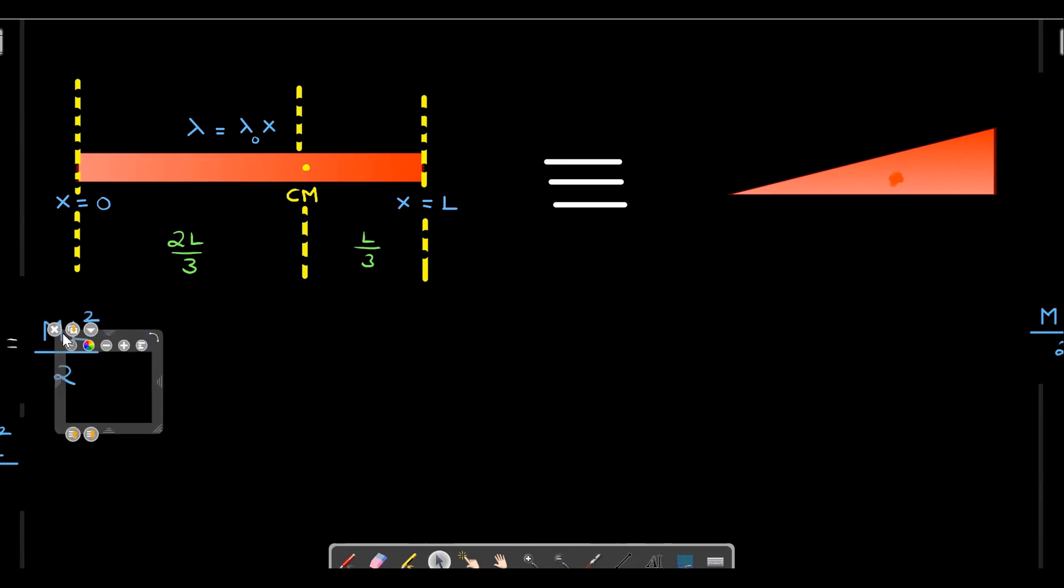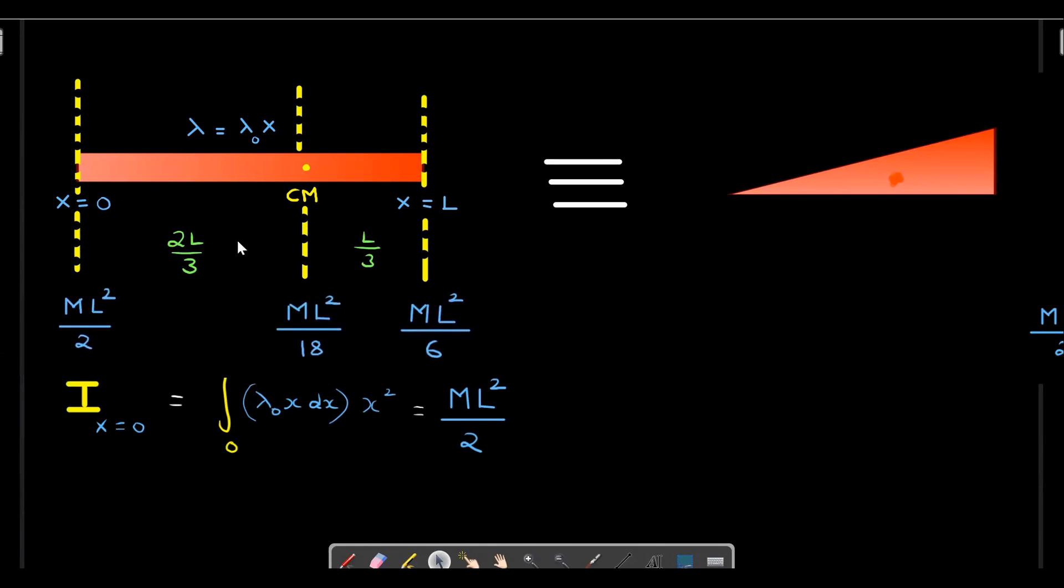If we have to calculate moment of inertia, I think you will use integration. About this axis, each dm element - dm is lambda dx, lambda is lambda naught x - you'll do x squared, integrate from x equals 0 to L, and you will get ML squared by 2. After getting the result, seeing the result is more important. If you shift it to center of mass using parallel axis theorem and then from center of mass to here, you should not commit the mistake of shifting directly from x equals 0 to L. You have to always use parallel axis theorem up to center of mass first and then to another axis.